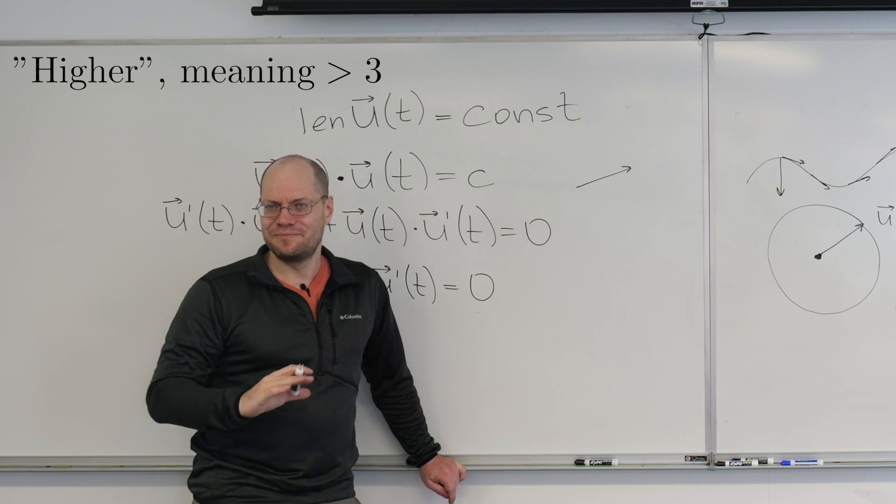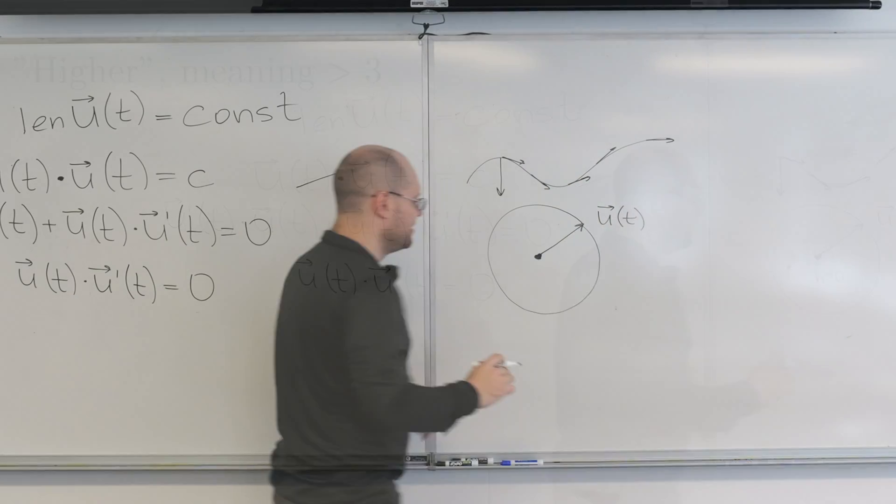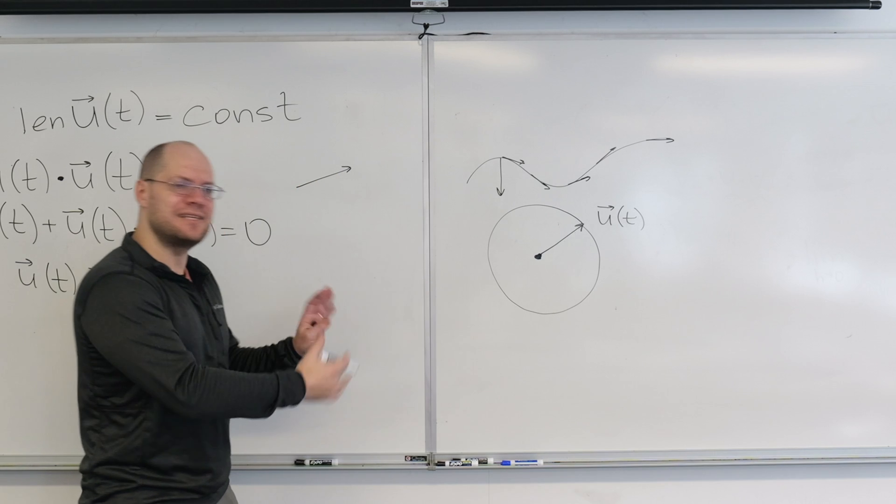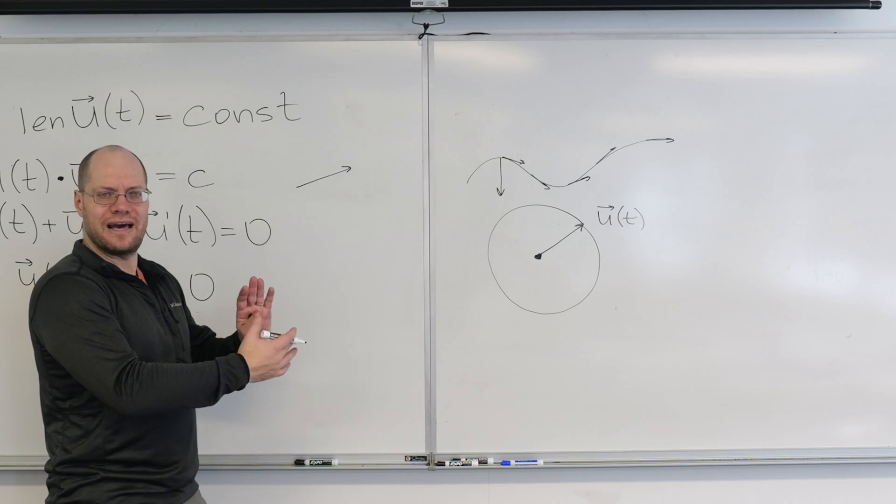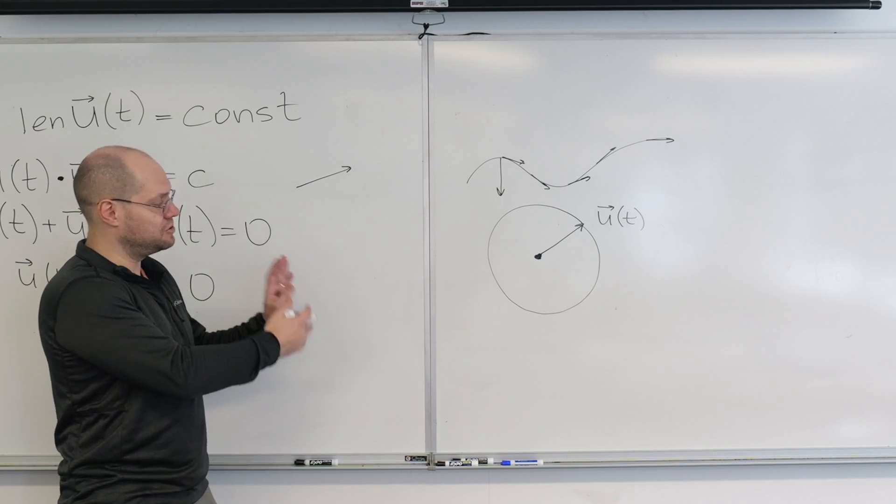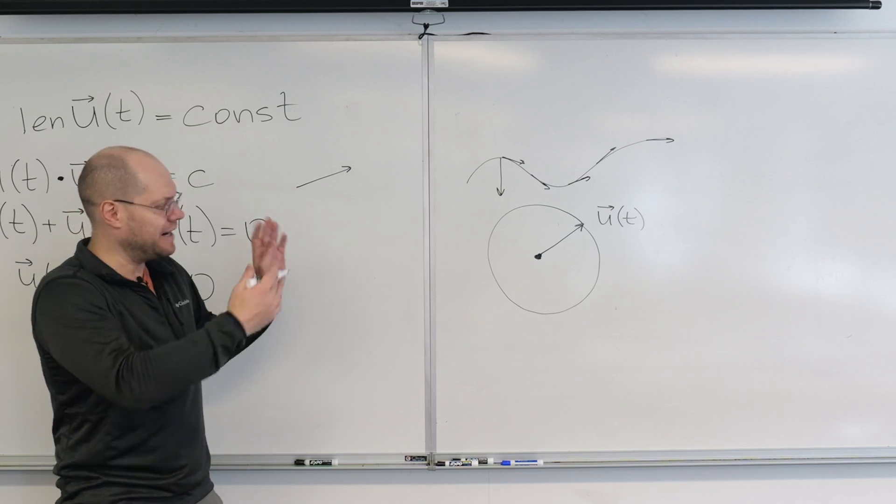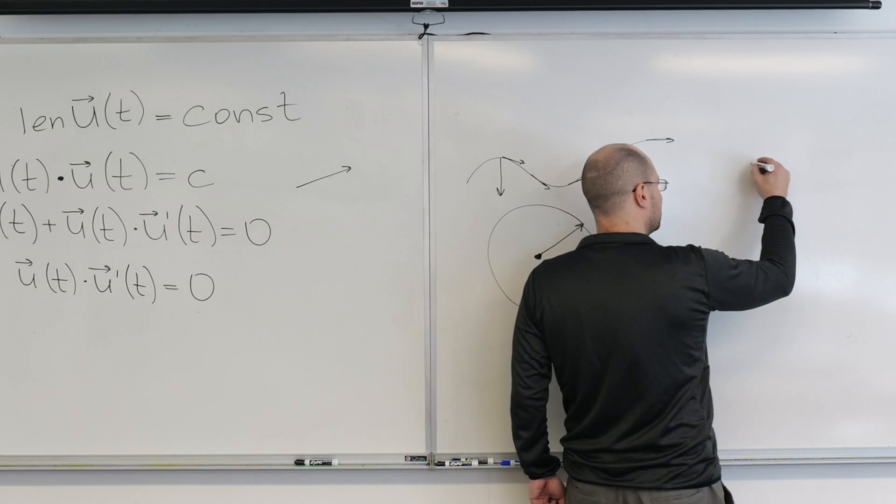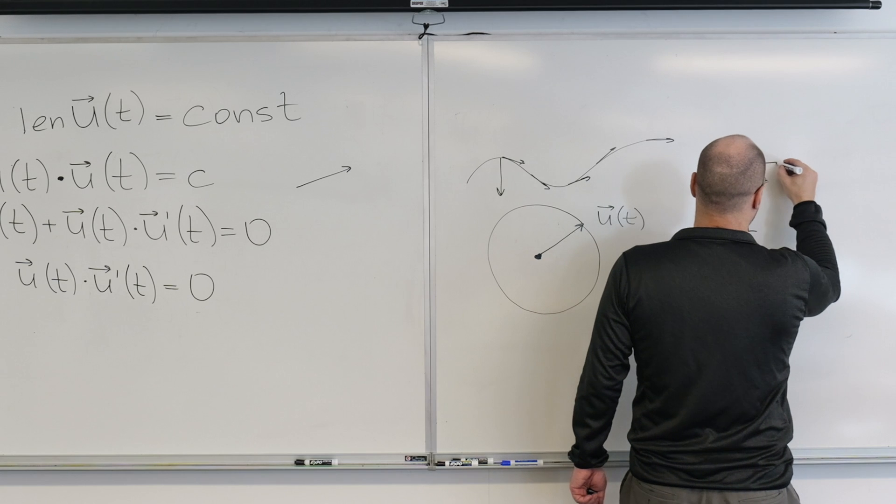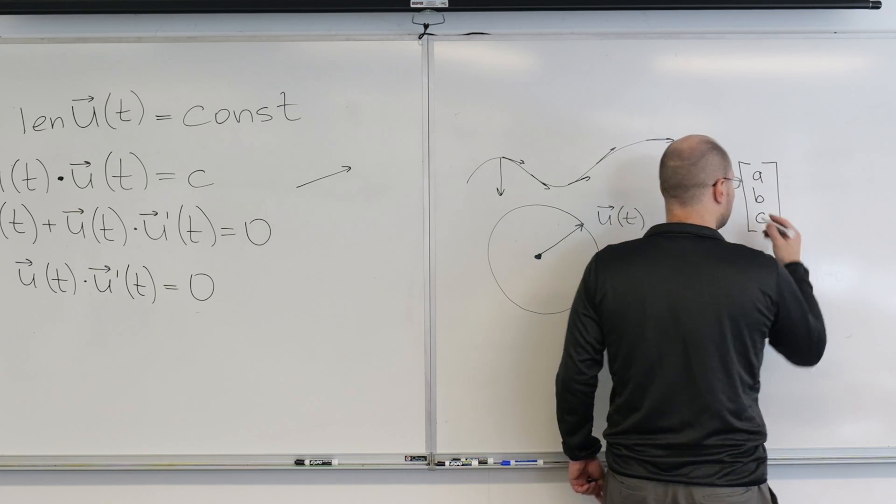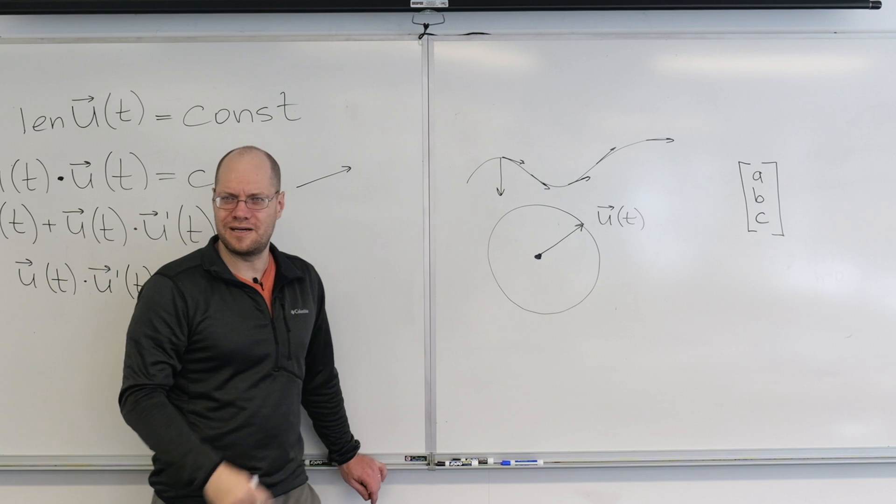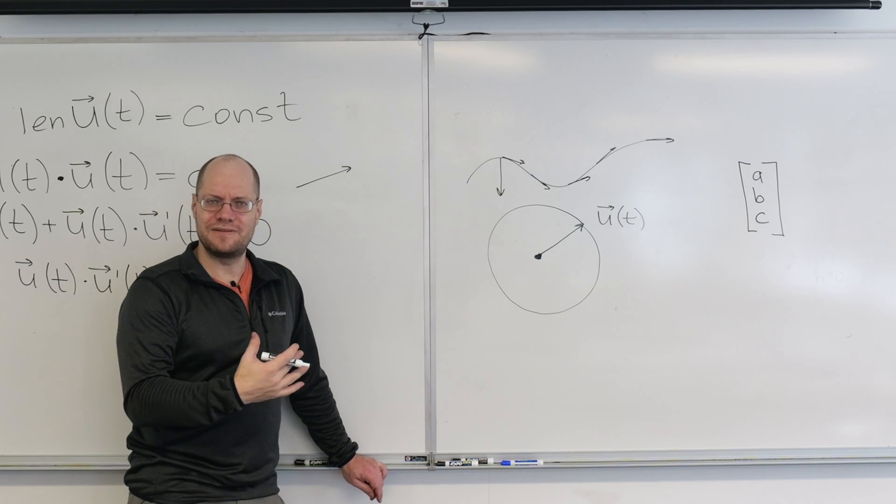Because when you hear vector, you're just like, yes, I accept Pavel's view that vectors are just geometric directed segments or arrows. But I also know that it's a triplet of numbers, right? And if it's a triplet of numbers, it could be a quadruplet of numbers and then an n-tuple of numbers.